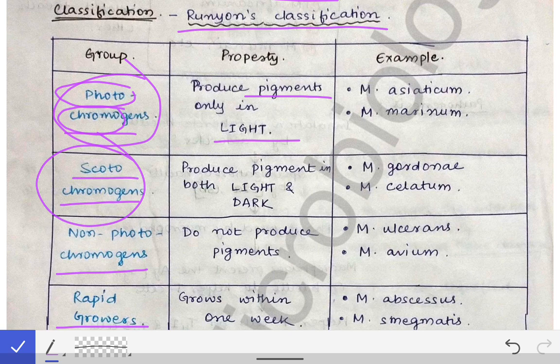'Scoto' relates to darkness or night, and 'chromo' means color. Scotochromogens are those mycobacteria which produce pigment in both light and dark. Those able to produce pigment in the dark will obviously also produce it in light — they are not limited by light conditions. Photochromogens, however, can only produce pigment in the light.